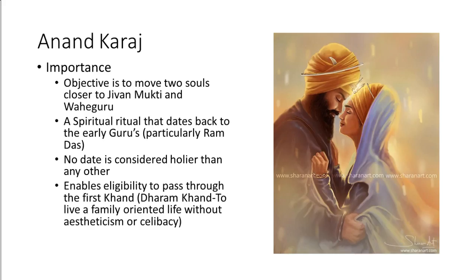One of the most important things is it enables eligibility to pass through the first Khand. The Khands are basically stages that you pass through in your life as a Sikh to attain enlightenment — there are five of them. All you need to know for now is that when you marry, you've begun your family-orientated life, which is Dharam Khand, the first Khand. And that, once you've gone through that, allows you to move on to the second, third, fourth, and fifth.